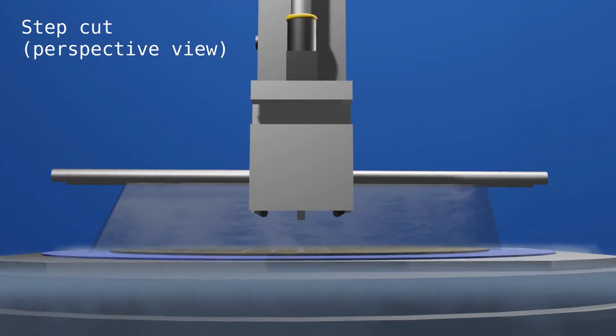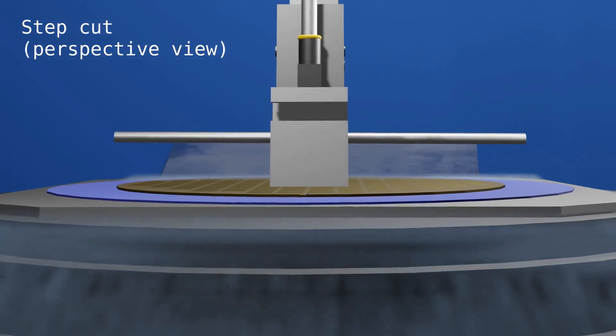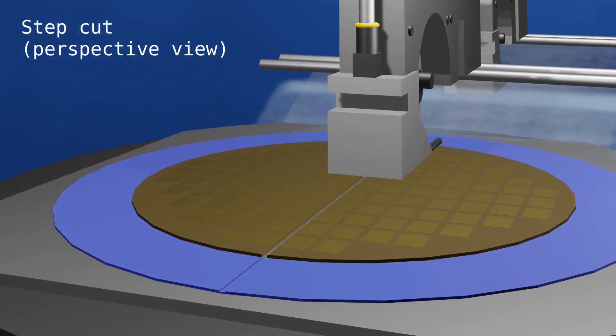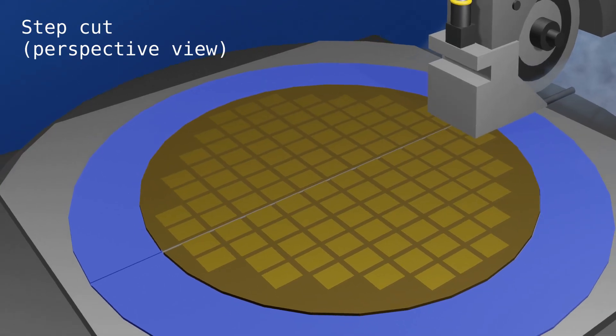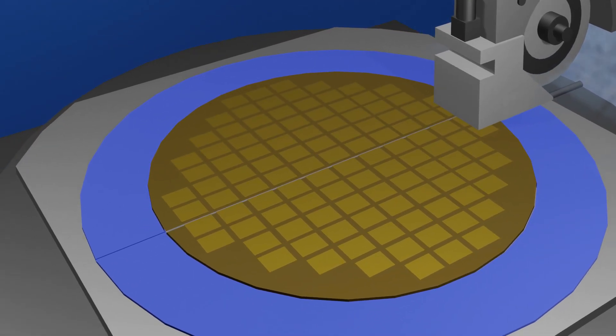This process is used to reduce chip out. This can be done with two blades on the same spindle or with two separate single-bladed spindles like we show here.